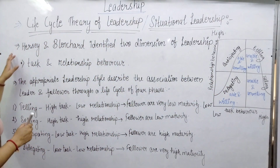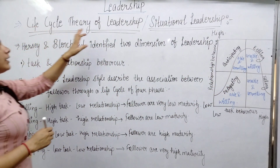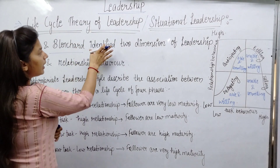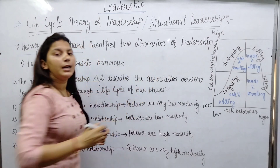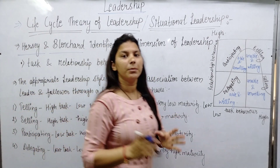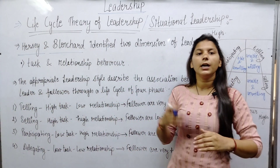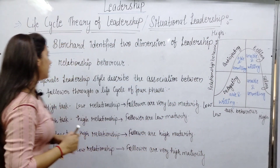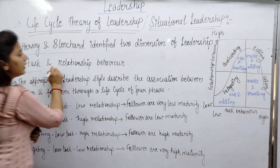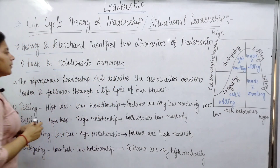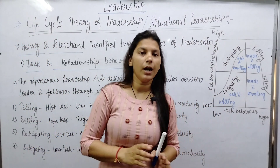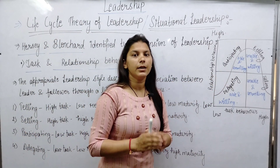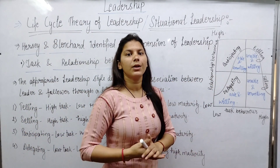The Life Cycle Theory is given by Hersey and Blanchard, who identified two dimensions of leadership. Two dimensions have been taken: task behavior and relationship behavior. With the help of a diagram, we will understand which leadership style we should adopt with which followers.